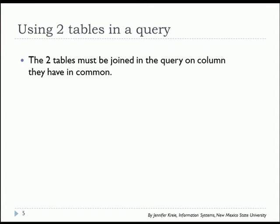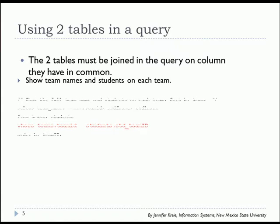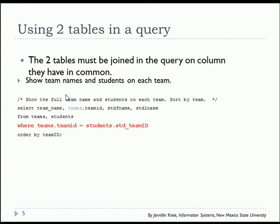We'll first look at an example using two tables. We're going to show team names and student information for those students on each team. We have a select clause with team name, team ID, student first name, student last name. The from clause will list two tables separating them with commas. In the where clause we will define exactly how those two tables join based on the primary key and the foreign key.